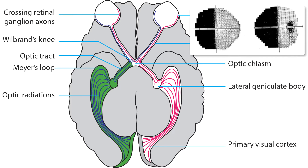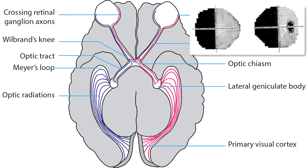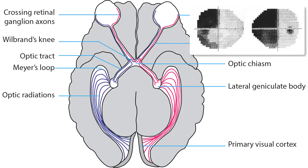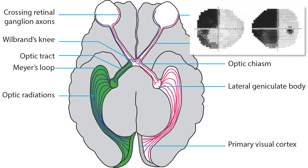When the patient has a complete homonymous hemianopia, as shown here, you cannot tell where the lesion lies within the retrochiasmal visual pathway — it could be almost anywhere. On the other hand, when the homonymous hemianopia is incomplete, you can use the shape of the defects to locate the lesion within the retrochiasmal visual pathway.